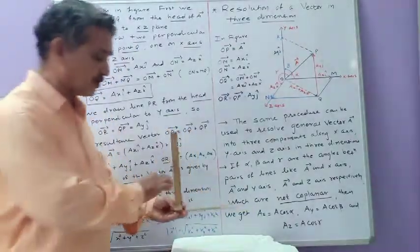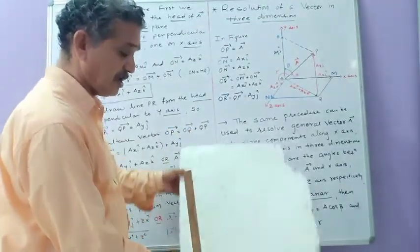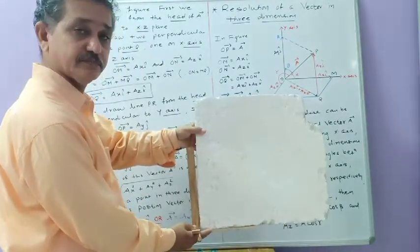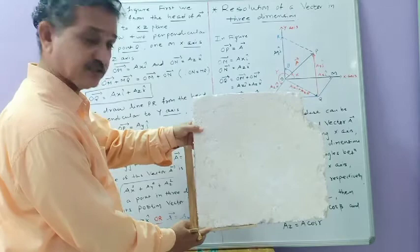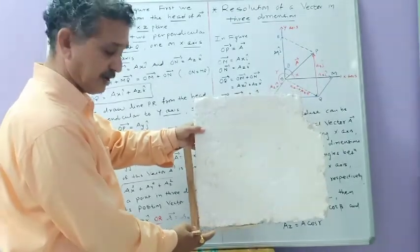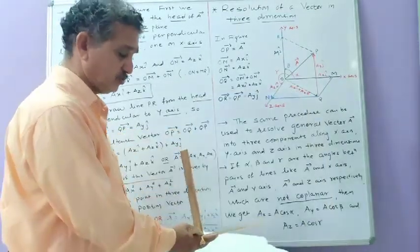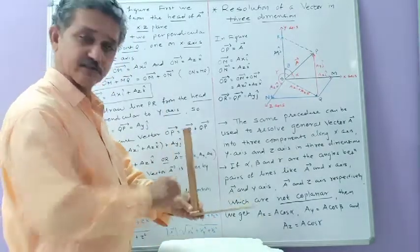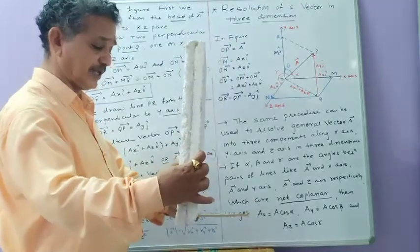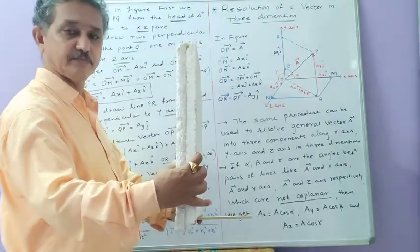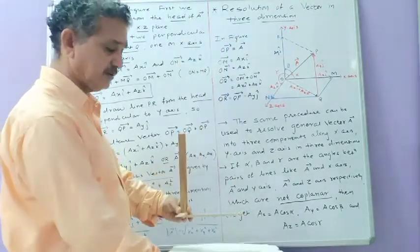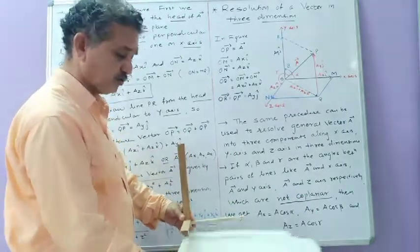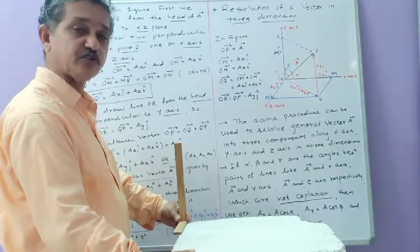This is the x-y plane because this is the x-axis and this is the y-axis. Then, since this is the y-axis and this is the z-axis, if I hold the instrument like this, this becomes the y-z plane. Then this is the x-axis and this is the z-axis, so between them this plane is called the x-z plane.